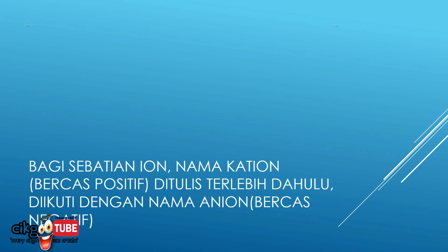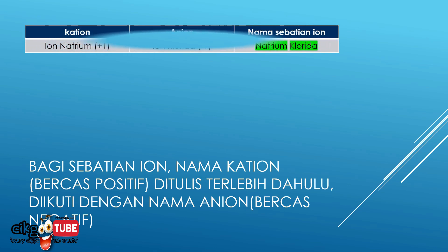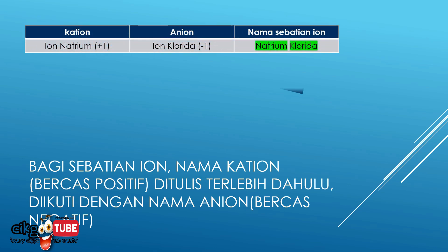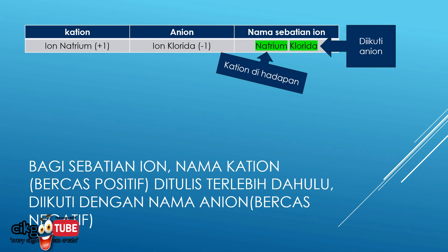Untuk namakan sebatian ion natrium dan ion klorida, kita perlu letakkan kation di hadapan diikuti dengan anion di belakang. Jadi namanya adalah natrium klorida.